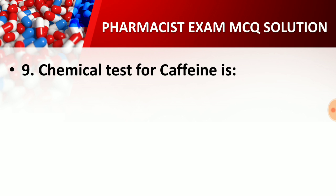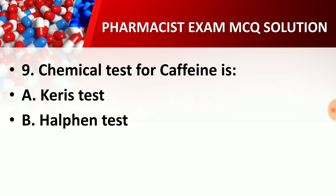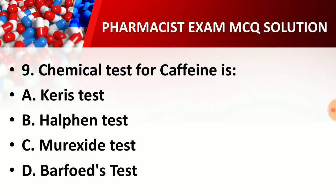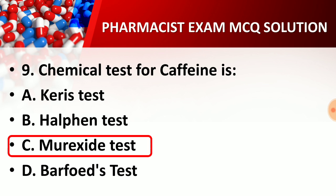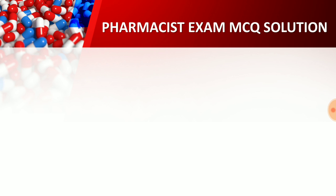Question number nine: Chemical test for caffeine is — option A, Carey's test; option B, Halphen's test; option C, Murexide test; option D, Barfoed's test. The right answer is option C, Murexide test. The chemical test performed for caffeine is the Murexide test.